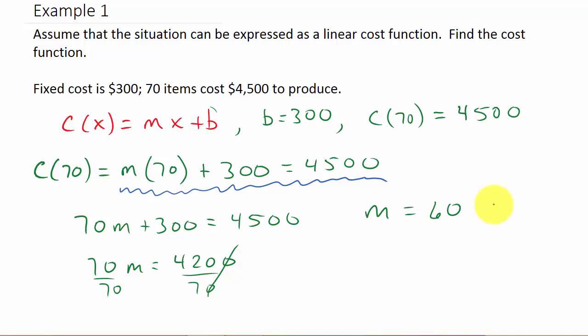So now that I have m is 60, I know what b is. Now let's plug those into our cost function. So our cost function C(x) is equal to m, which I calculated to be 60, times x plus the fixed cost, which is 300. And there's your answer.